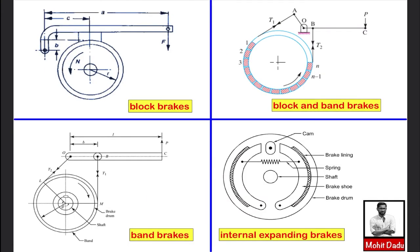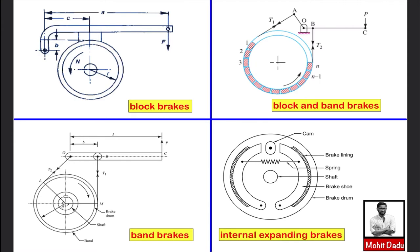In the first figure you can see block type brakes, also known as shoe brakes. Here the brake drum is being retarded or completely stopped, and its kinetic energy is absorbed by a material in the form of a block or shoe containing friction lining. This friction lining is made of asbestos, wood, leather, cork, belt, ferrodos, etc. Since the absorbing material is in the form of a block, this is known as a block brake.